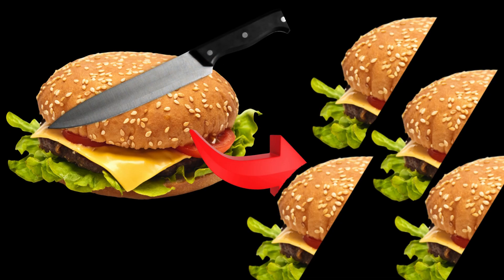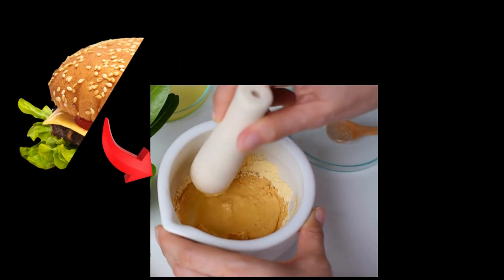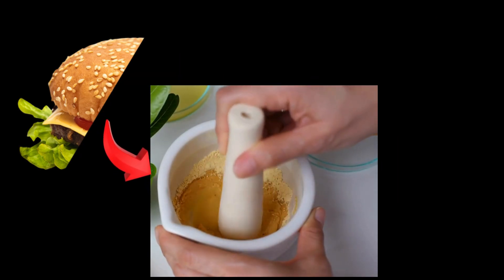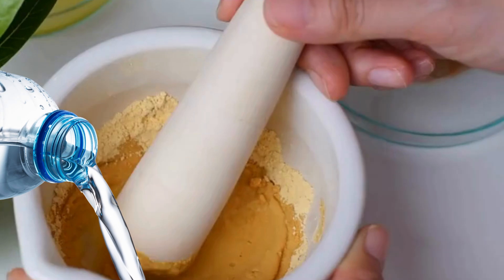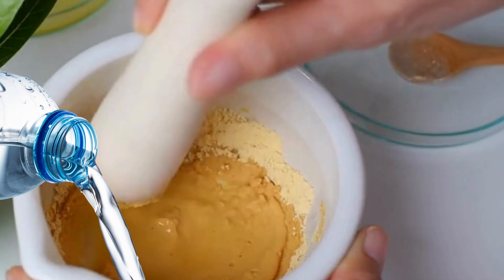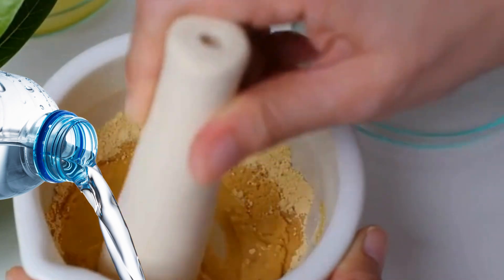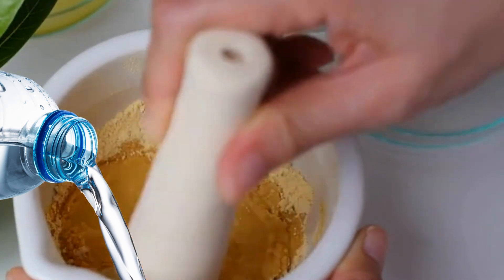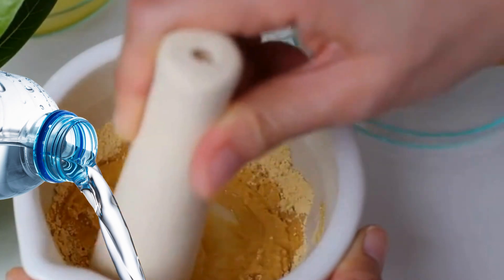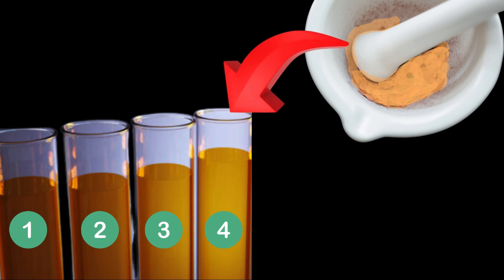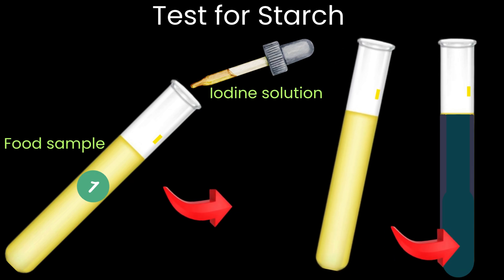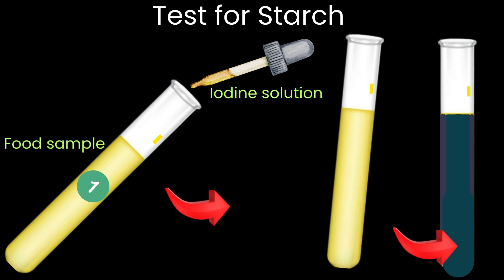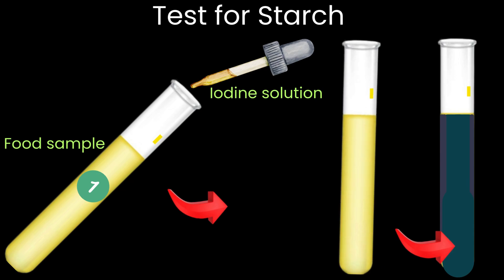First, you divide the cheeseburger into four equal parts and grind them into a paste using the mortar and pestle. To make the food paste more workable, you mix it with distilled water, creating a homogeneous suspension. You then distribute this mixture into four separate test tubes. Now let's analyze what is inside our cheeseburger.